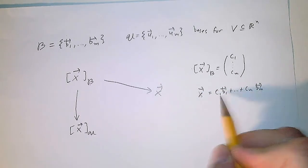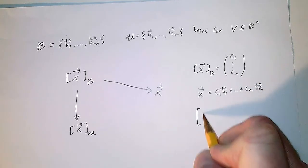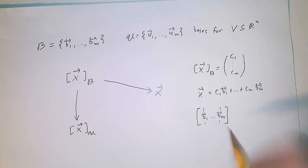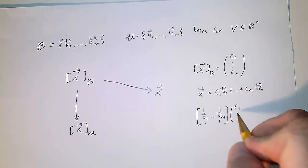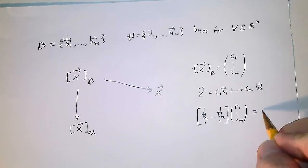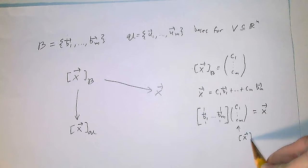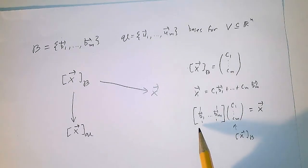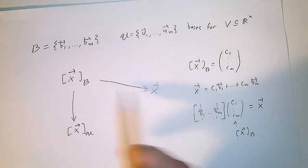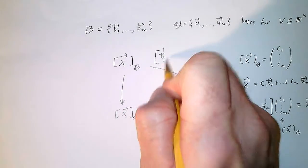One way we like to think of a linear combination is as a matrix product. If I take vectors B1 through Bm and align them in columns in a matrix, and multiply by C1 down to Cm, I'm reproducing the linear combination to get X. This matrix — with B1 through Bm aligned in columns — is the matrix I multiply the coordinate vector by if I want to get X.